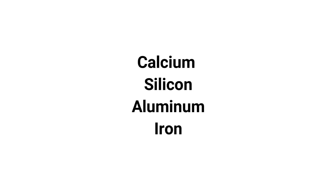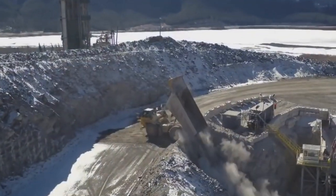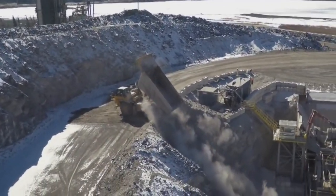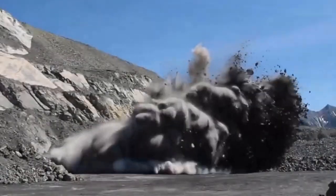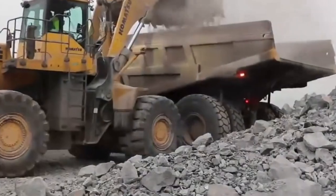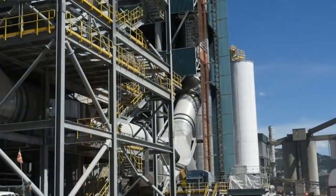Nowadays, cement is manufactured through controlled chemical combinations of calcium, silicon, aluminum, iron, and other ingredients. The first step in manufacturing Portland cement involves quarrying raw materials like limestone and clay. These rock materials are then crushed in several stages to produce aggregates about three inches in size. The crushed rock is then combined with other ingredients such as iron ore, fly ash, and other materials depending on the chemical proportions required for the final product.